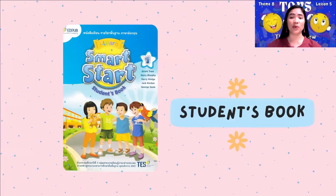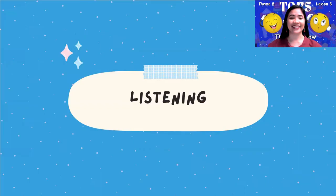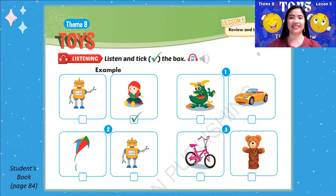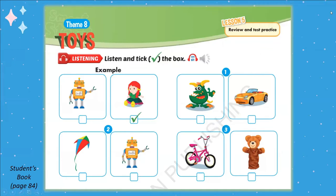Take out your student's book and open it on pages 84 to 85. Listen very carefully. Listen and tick the box. Look at the pictures and listen. There is one example: What do you have? I have a doll. Wow, it's nice. Can you see the tick? This is an example.